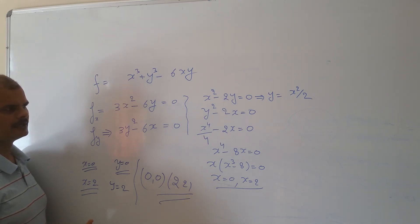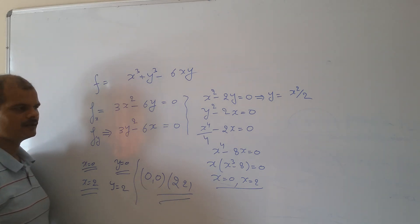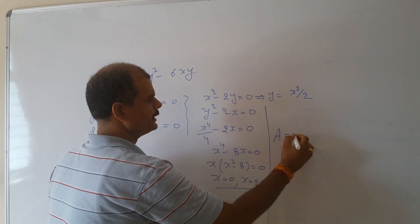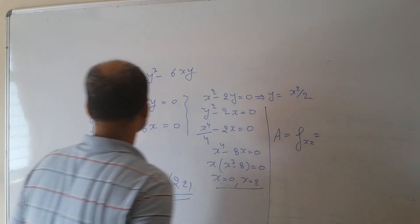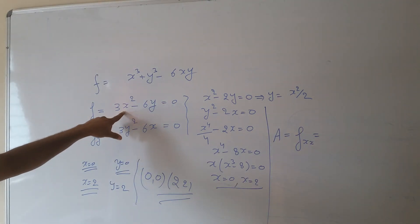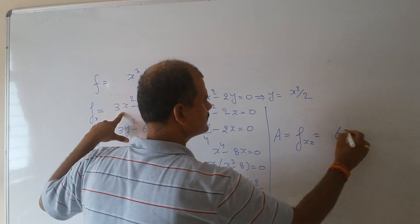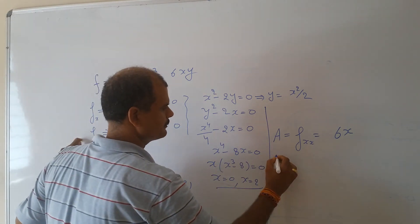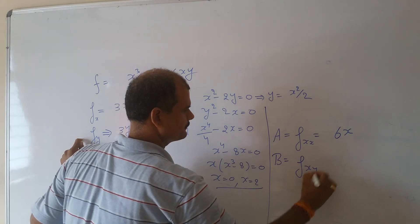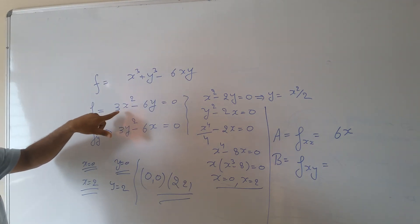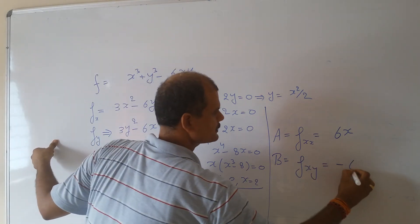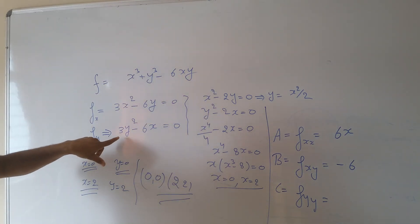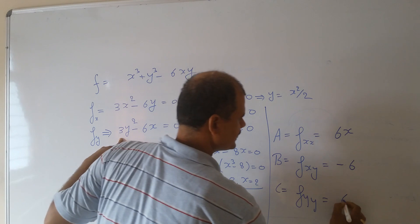Now go for the second derivative test to identify which point is the maxima point and which is the minima point. A = fxx = 6x, B = fxy — differentiating fx with respect to y gives minus 6, and C = fyy = 6y.